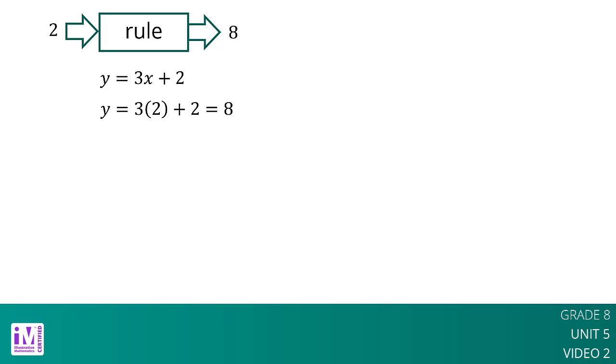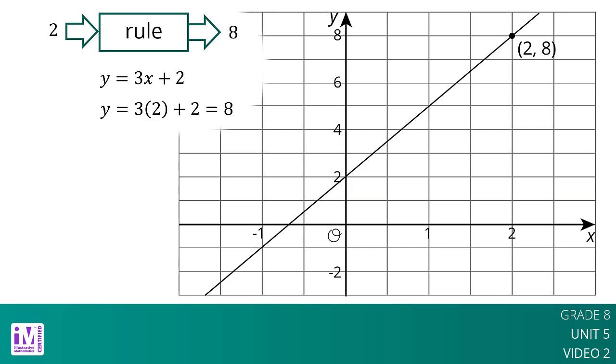If we had a graph of this function instead, then the coordinates of points on the graph are the input-output pairs. So we would read the y-coordinate of the point on the graph that corresponds to a value of 2 for x. Looking at the graph of this function here, we can see the point on it, so the output is 8 when the input is 2.